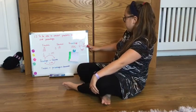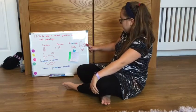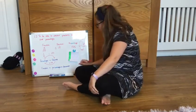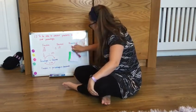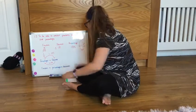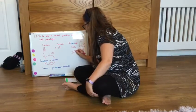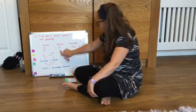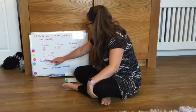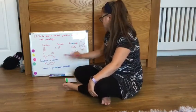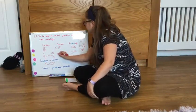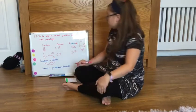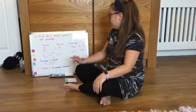That makes it a lot easier now to work out my percentage, because what I'm saying is there are 20 pieces out of 100. So it's 20%, and again to find the decimal from a percentage I've got to divide it by 100. So I would have 0.2. I could write 0.20 but I don't have to.